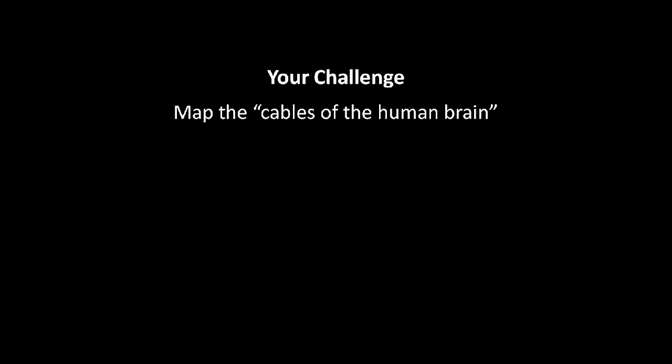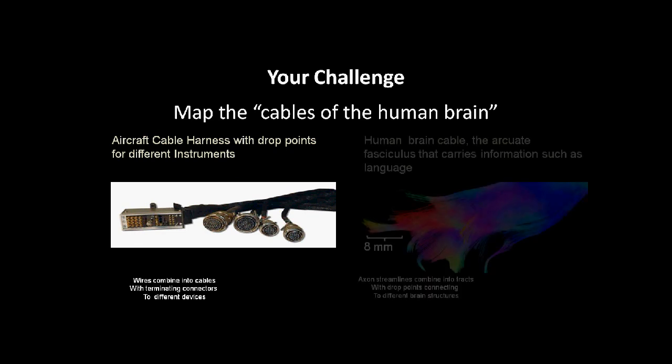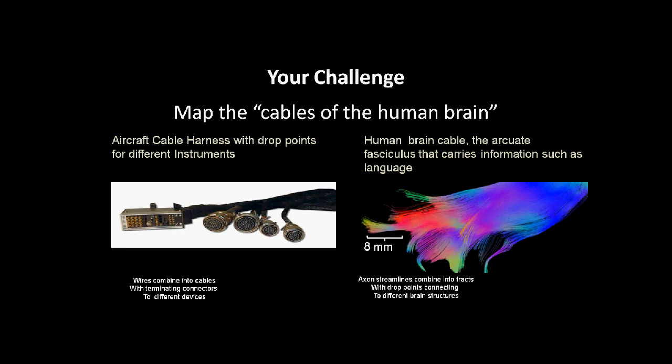Your challenge is to map the cables of the human brain based on fiber data. On the left is an aircraft cable harness with drop points for different instruments. Wires combine into cables with terminating connectors to different points. On the right is a human brain cable, the arcuate fasciculus, that carries information such as language. The axon streamlines combine into tracks with drop points connecting to different structures.